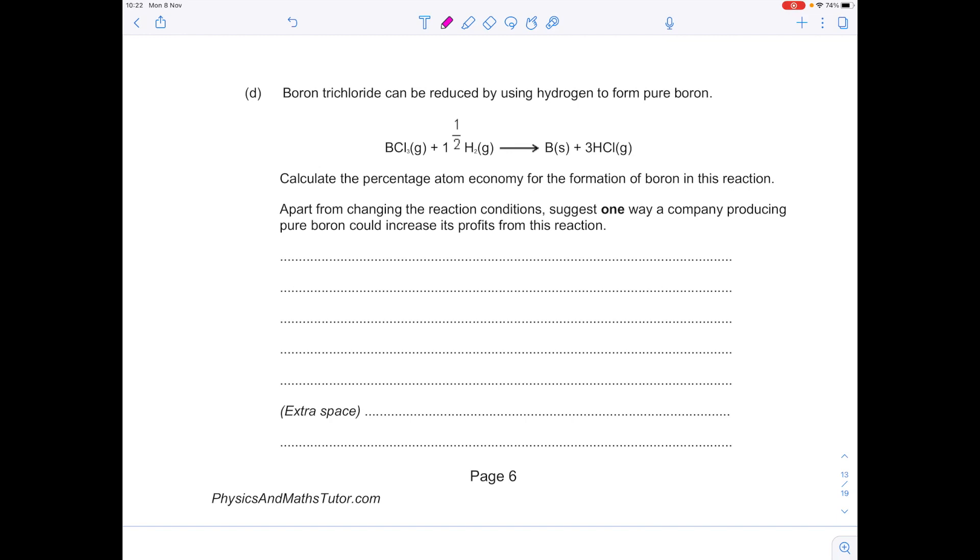Boron trichloride can be reduced by using hydrogen to form pure boron. Calculate the percentage atom economy for the formation of boron in this reaction. Apart from changing the reaction conditions, suggest one way a company producing pure boron could increase its profits from this reaction. So, atom economy is the MR of the useful product divided by the MR of all the reactants times by 100.